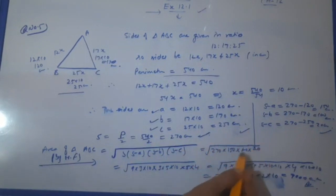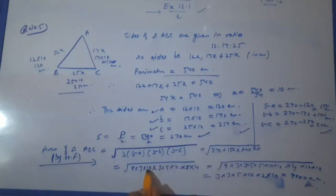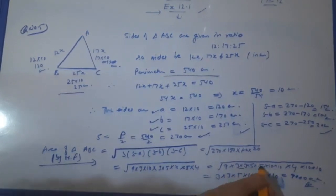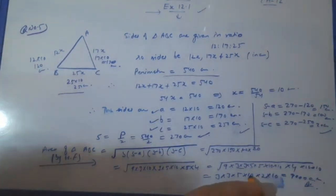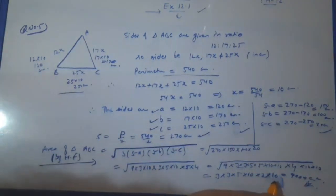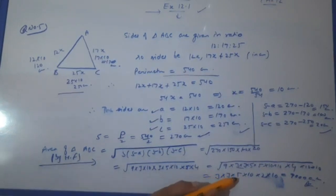Now, we are going to put all these values in the Heron's formula. S was 270, 270 × (S - A) is 150, (S - B) is 100, and (S - C) is 20. Now we will break this to solve it. 270 we broke: keep 10 aside, and 9 threes are 27. We will do like this: 3 × 5 × 10, and then 10 × 10. We are getting 5 × 4. Now we will pair them. 9 gives one 3 out. Two 3s give one 3 out. 5 gives one 5 out, 10 gives one 10 out. 4 gives 2 out. From these 10s, one 10 came out. Now we are getting the answer: 3 × 3 is 9, 9 × 5 is 45, 45 × 2 is 90, 90 × 100 gives us 9,000 cm square.